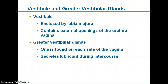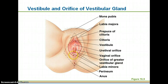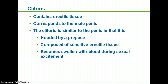The vestibule has hairless skin in that region with a different texture than other areas. It contains the external openings of both the urethra and the vagina. Also within the vestibule, you have the greater vestibular glands — one on each side of the vagina — and this is what secretes the lubricant during sexual intercourse. The clitoris corresponds to the male penis. It contains erectile tissue, is headed by a prepuce like the penis is headed by a prepuce or foreskin, and it becomes swollen with blood during sexual excitement.